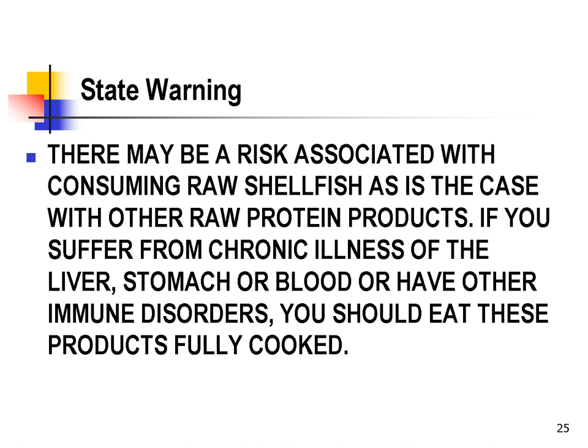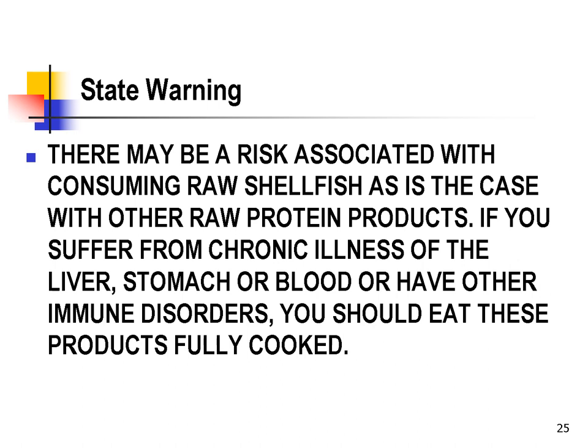All of these folks are at significant risk if they get a raw oyster containing a dangerous bug like Vibrio vulnificus. Now let's think about what this means in terms of assumption of the risk. If you see the warning and you have the chronic illness and you get sick and die, you were clearly warned and you assumed the risk by going ahead and eating the oyster. The waiter is not required to grill you on your health status and refuse to serve you raw oysters. On the other hand, if you don't have a chronic illness or immune disorder, you could read that waiver and believe it was perfectly safe to eat raw oysters — and if you're one of the unlucky few who gets seriously ill, you really have not assumed the risk and you'd probably have a reasonable lawsuit against the restaurant.